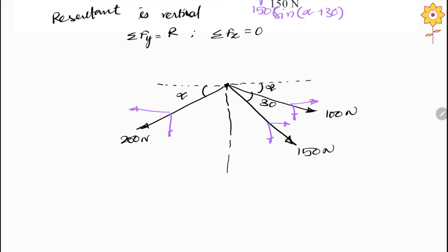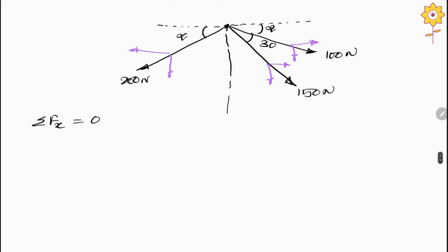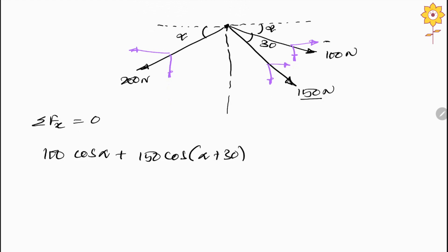Based on the condition summation of F of x equals 0, we consider all horizontal forces. The 100 Newton force is moving left to right, so positive: 100 cos alpha. The 150 Newton force is also moving left to right: positive 150 cos(alpha+30). The 200 Newton force is moving right to left, so negative: minus 200 cos alpha. This equation equals 0.